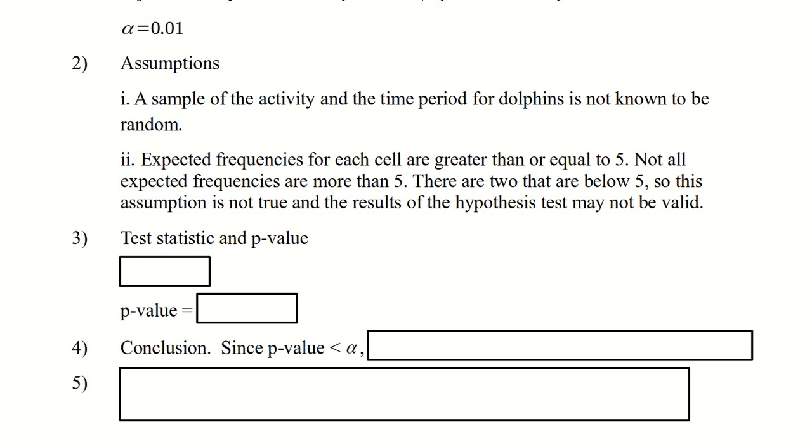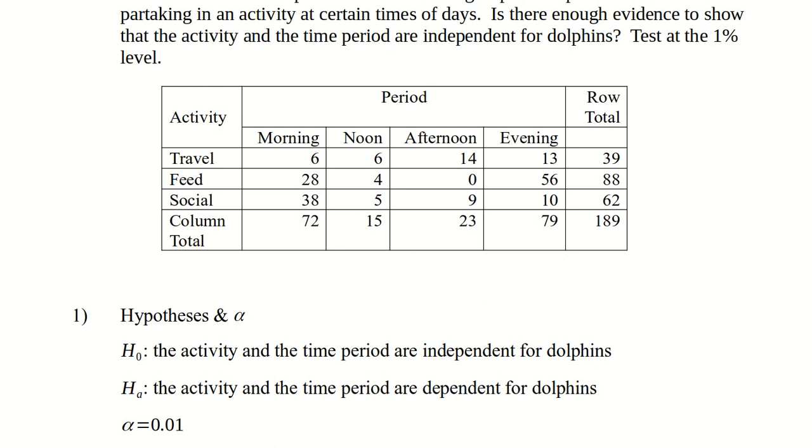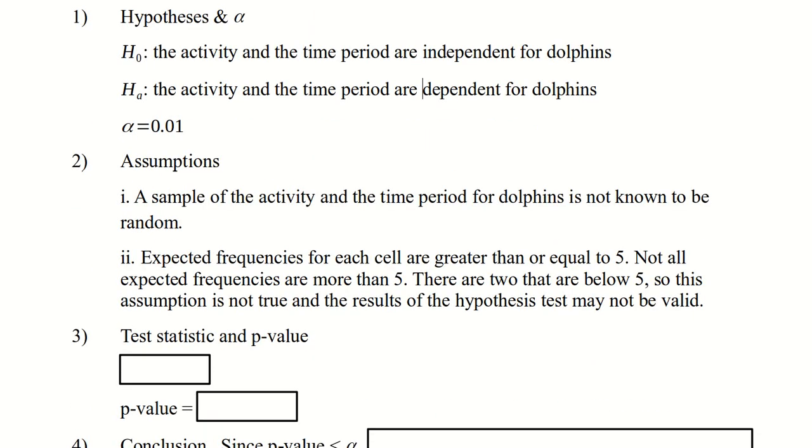We should say that we were never told whether this sample is random, and for that reason this may not be a valid test. The expected frequencies are all greater than five. Go back up and you can see that, oh my gosh, one of them is zero. It looks like feeding in the afternoon is zero. In fact, there are two that are below five. So this assumption is not true, and the results of the hypothesis test may not be valid. So make sure in your assumption you say, we're going to go through with this, we're asked to do it, but the results may not be valid. That's probably the single most important three words in this problem.